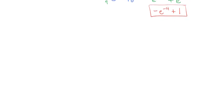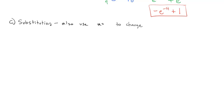Evaluating these limits is generally straightforward, but we need to be careful when doing a substitution problem. With substitution, the limits represent what x equals, so when we change to u, that's going to change what the limits actually become. What's nice is it saves us work at the back end. With substitution, we need to also use the u equals equation to change the limits.